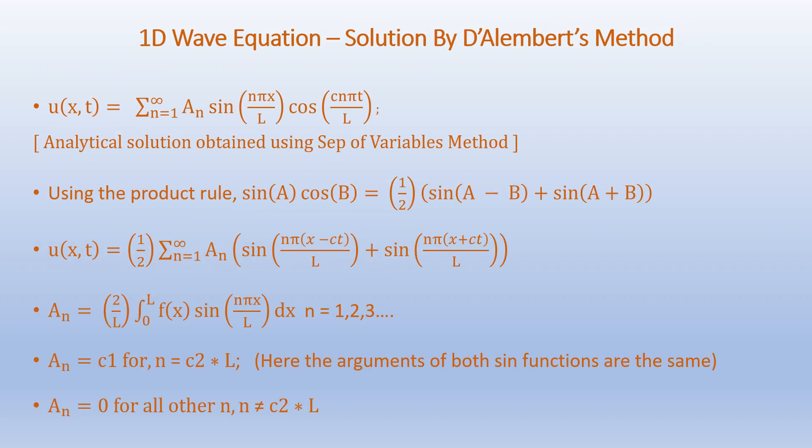The same problem can be solved using D'Alembert's method. We start with the analytical solution from the separation of variables method: U of X comma T equals the sum from n=1 to infinity of An·sin(nπX/L)·cos(CnπT/L). Using the trigonometric product identity sin(A)cos(B) equals half times [sin(A−B) plus sin(A+B)], the equation for U of X comma T becomes half times the sum of An·[sin(nπ(X−CT)/L) + sin(nπ(X+CT)/L)], where An equals 2/L times the integral from 0 to L of F(X)·sin(nπX/L) dx.